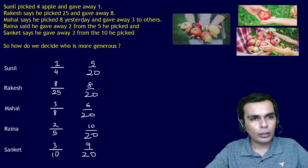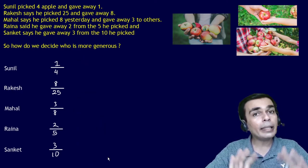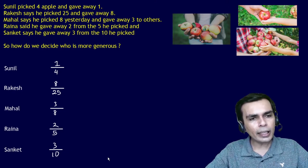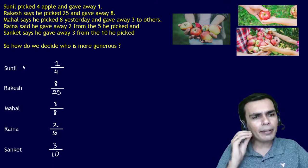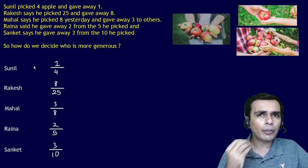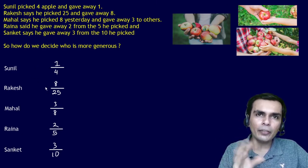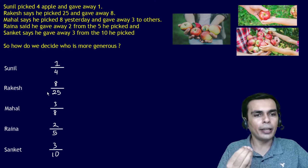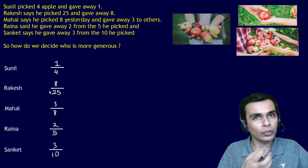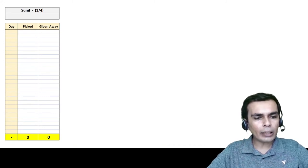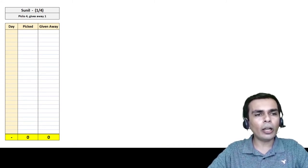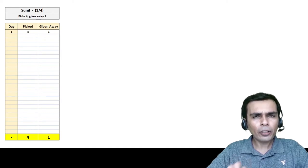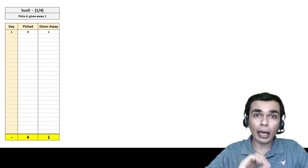So what do we do now? Let's imagine that each one of them has picked 100 apples — 100 is a nice round number. If they pick at the same rate, every time Sunil picks 4 he gives away 1, so that rate stays constant. Let's see when he reaches 100 and how many he gives away from 100.